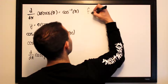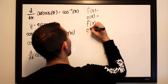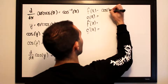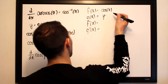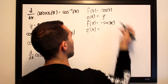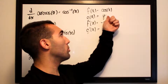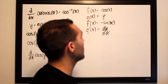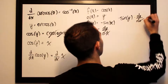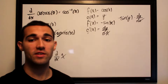We define our inner and outer functions: the outer function f(x) is cosine of x, and the inner function g(x) is y. The derivative f'(x) is negative sine of x, and the derivative of y is dy/dx. Applying the chain rule — f' composed with g, multiplied by g' — we get negative sine of y times dy/dx on the left side, and just 1 on the right side, since the derivative of x with respect to x is 1.